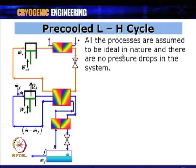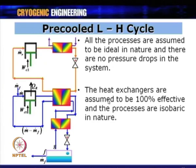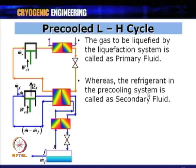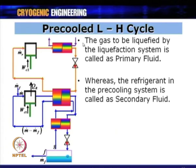When analyzing this cycle, all heat exchangers are assumed 100 percent effective and processes are isobaric. The gas to be liquefied is called the primary fluid (nitrogen, oxygen, air, etc.), while the refrigerant in the pre-cooling system is called the secondary fluid. These may also be referred to as the primary circuit (Linde-Hampson cycle) and secondary system (pre-cooling circuit).